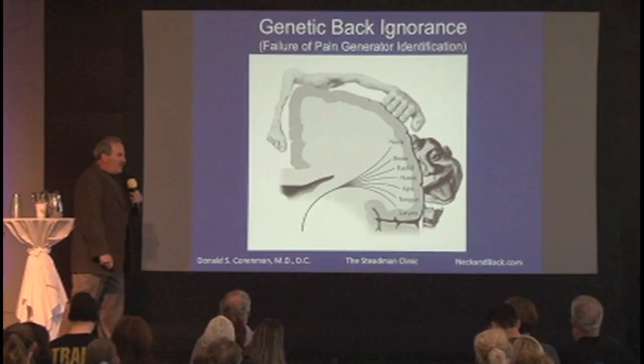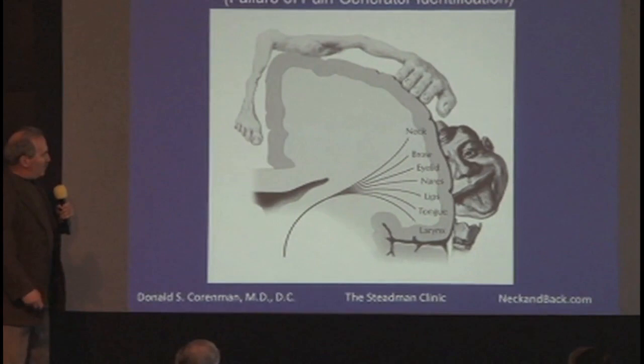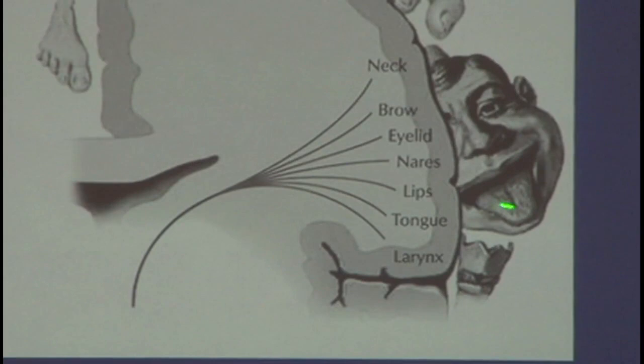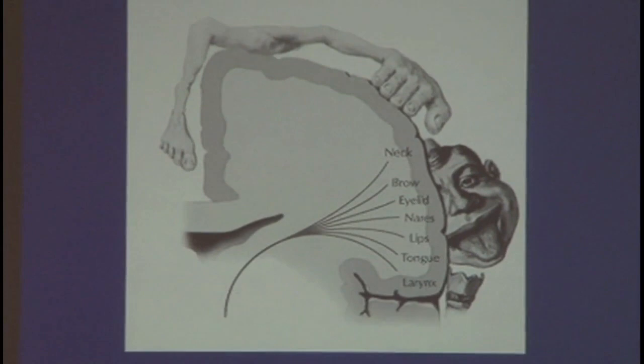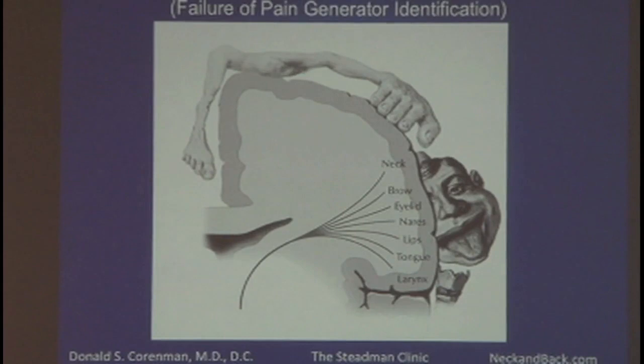Why don't people come in and say 'Doc, my left L3-4 facet — I'm sure I pulled the capsule'? It's because of Frank Netter's homunculus. This diagram of the brain shows how much cortical surface area is devoted to each body part. The tongue has three times as much surface area devoted to it than the entire lumbar spine. This is why you can't tell me exactly where your back hurts — you're not wired to know. You don't have the neurons to specifically identify your left L2-3 disc.